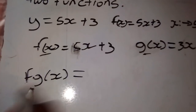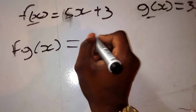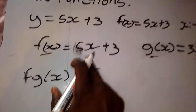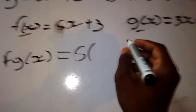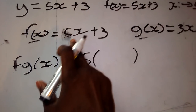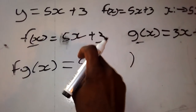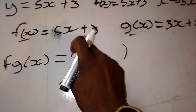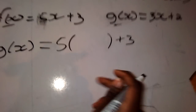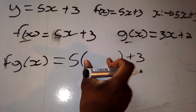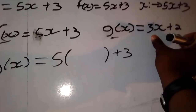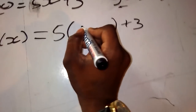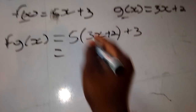Because f comes first, you write the 5 first. Anywhere you spot an x in the first function, put a bracket and leave a space. Then put back the plus 3. The space you left is where you place g of x, which is 3x + 2. So you get 5(3x + 2) + 3.